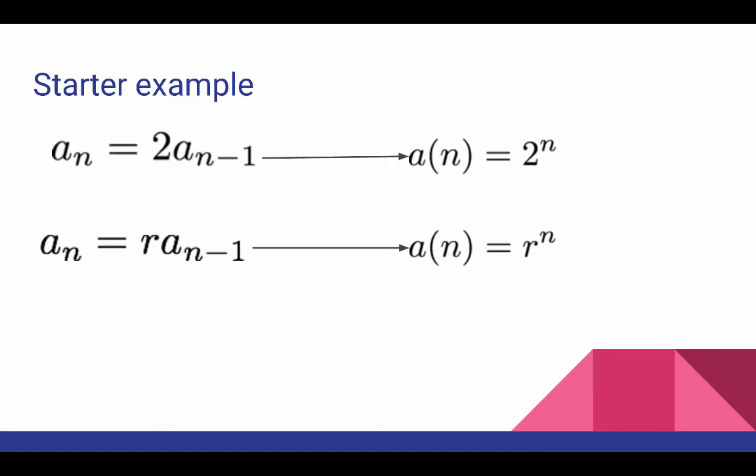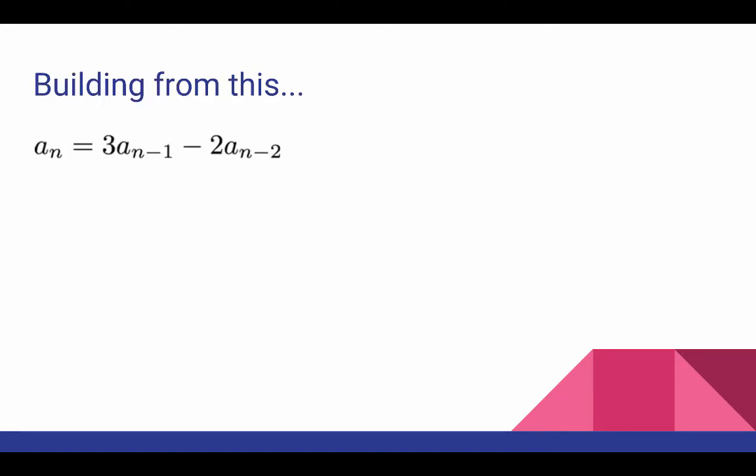So building from this, what happens when we have a linear second order homogeneous recurrence relation like this one? You should first check to see that just peeling off the numbers and making exponential functions out of them, which worked for the starter example, does not work here. These two things are not closed formula solutions to the recurrence relation.